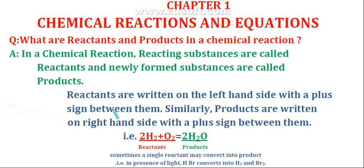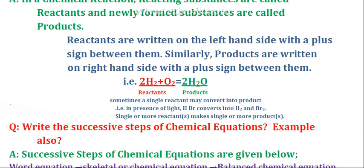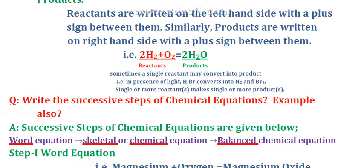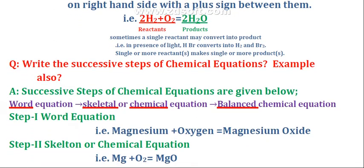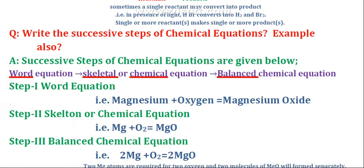In chemical reactions and equations, we have studied about reactants and products. Reactants are the substances that react with each other, and products are the newly formed substances. For example, when two substances A and B react with each other, A plus B will equal the newly formed substances C plus D, which are called products.